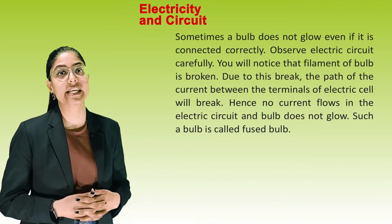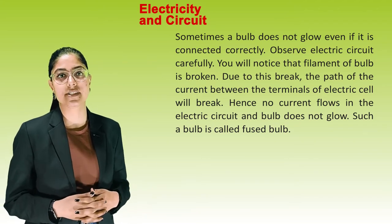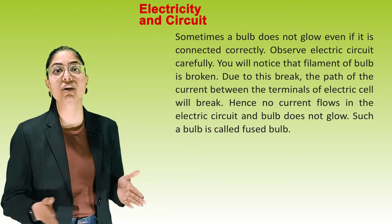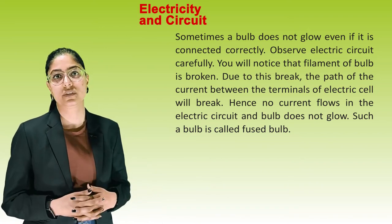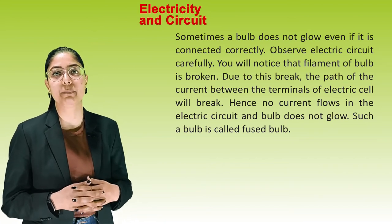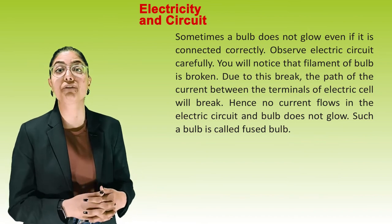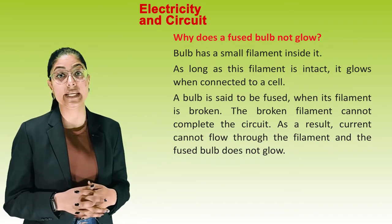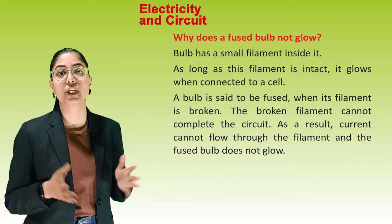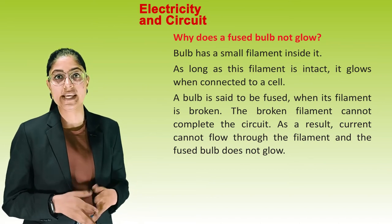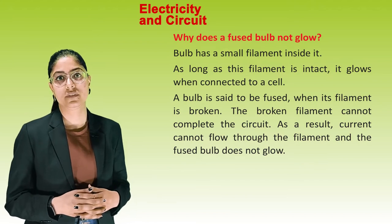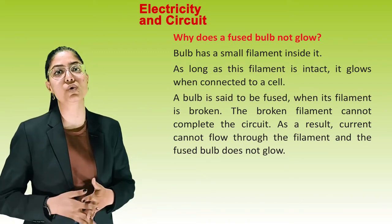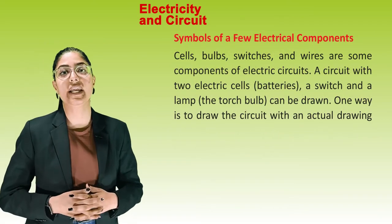Sometimes a bulb does not glow even if it is connected correctly. Observe the electric circuit carefully — you will notice that the filament of the bulb is broken. Due to this break, the path of current between the terminals of the electric cell is broken. Hence, no current flows in the electric circuit and the bulb does not glow. Such a bulb is called a fused bulb. A bulb is said to be fused when its filament is broken. The broken filament cannot complete the circuit, so current cannot flow and the fused bulb does not glow.